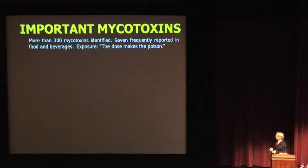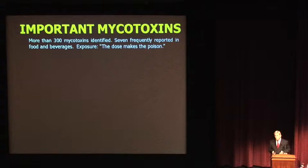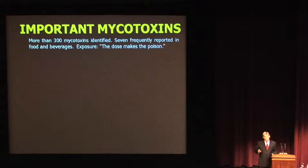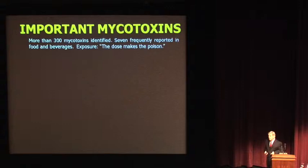More than 300 of these fungal toxins occur in corn, peanuts, cottonseed, and pretty much all foods — they're ubiquitous. Out of those identified chemically, there are seven that are frequently reported to occur in your food. Exposure is variable and based on a lot of different things, but the basic tenet in toxicology is it's the dose that makes the poison. Everything is potentially toxic — you can drink too much water and harm yourself. Some compounds will be digitally toxic, carcinogenic, or mutagenic to varying degrees.